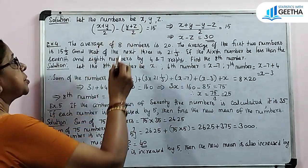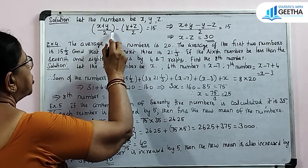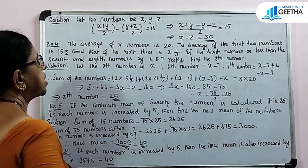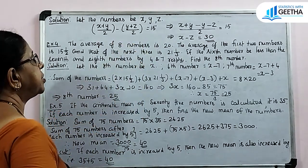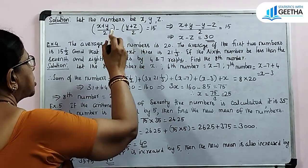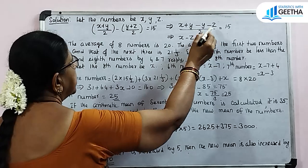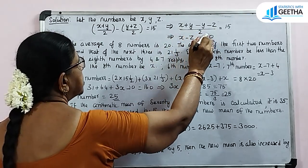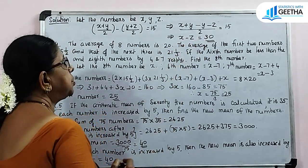Let the numbers be x, y, z. The average of the first two is x plus y by 2, and the average of the 2nd and 3rd is y plus z by 2. Their difference equals 15, so x plus y by 2 minus y plus z by 2 equals 15. This implies x minus z equals 30.